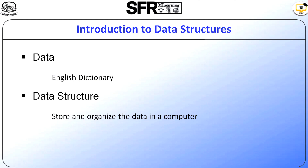For example, let us consider one simple example — an English dictionary. In a dictionary, words are sorted. Just think about it: if the words are not sorted, you can't imagine how impractical and impossible it would be. So the dictionary is organized as a sorted list of words.